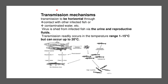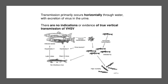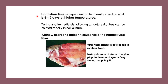Transmission of VHSV is mainly horizontal through contact with infected fish, contaminated water, and the virus is shed from infected fish via urine and reproductive fluids. Transmission readily occurs in the temperature range of 1 to 15°C but can occur up to 20°C. There is no evidence of true vertical transmission of VHSV. The incubation time depends on temperature and dose and is about 5 to 12 days at higher temperatures.